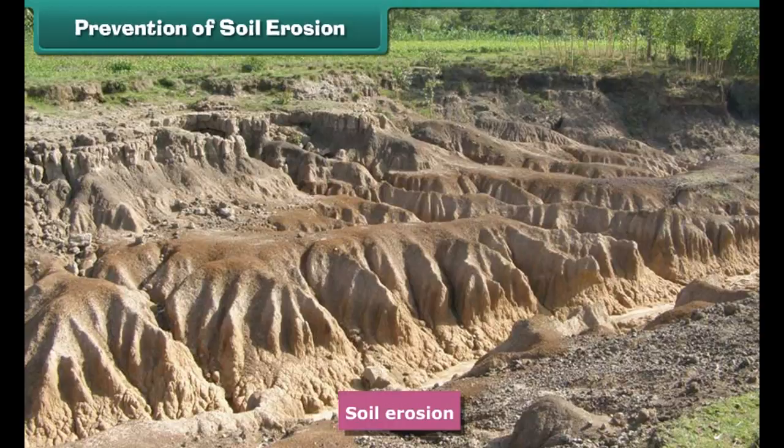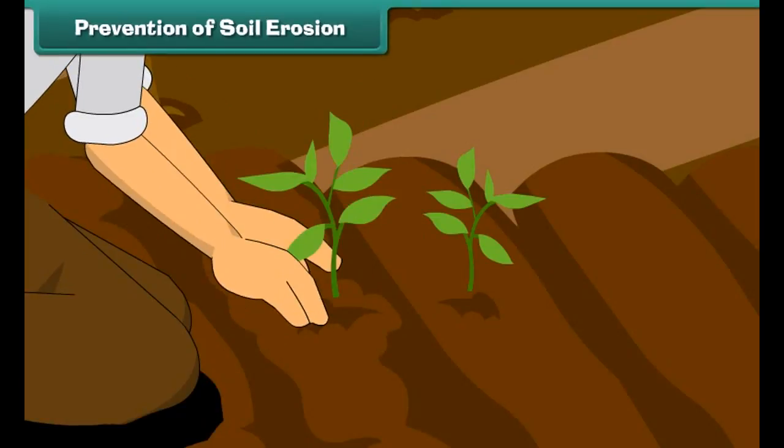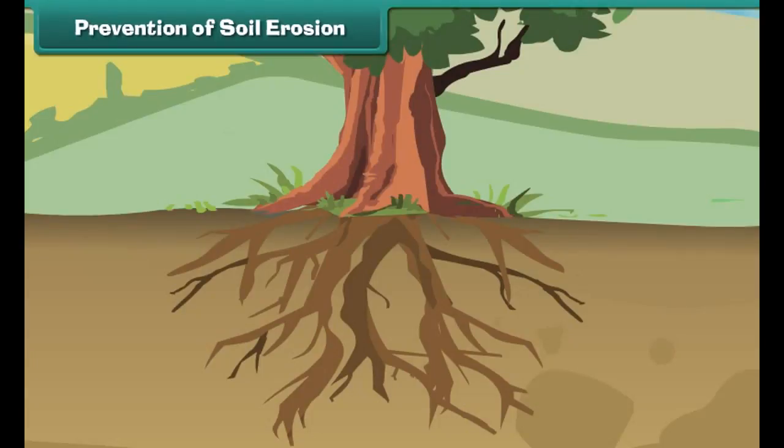It increases the risk of flooding. The eroded soil deposits in water resources like rivers and lakes, and pollutes them. Soil erosion is a major environmental problem that has affected all over the world, from forests to deserts. Thus it's the need of the hour to conserve the soil by preventing soil erosion.